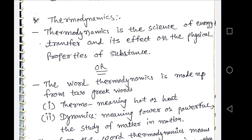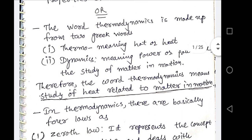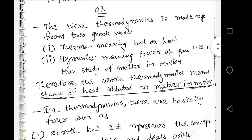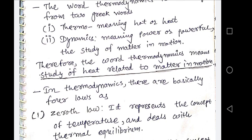Now, there are four different laws of thermodynamics available. First is the zeroth law of thermodynamics. Second one is the first law of thermodynamics. Third one is the second law of thermodynamics. And fourth one is the third law of thermodynamics.